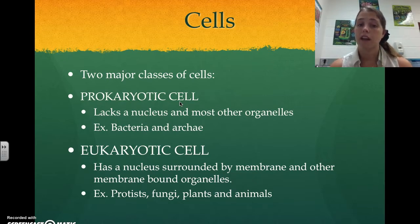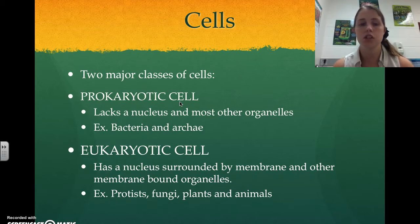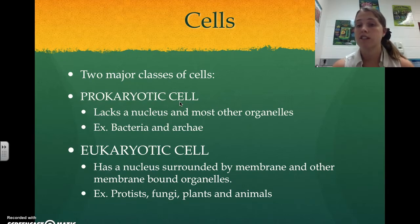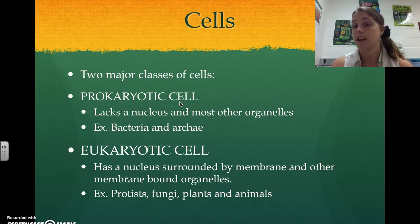We also have eukaryotic cells. These are more complex cells and they're compartmentalized, meaning they have little compartments or organelles that are responsible for different functions, including a nucleus that is surrounded by a membrane. There are several other organelles that are surrounded by membranes as well. Examples of eukaryotic organisms are protists, fungi, plants, and animals. And we are categorized as animals, so we are eukaryotic.